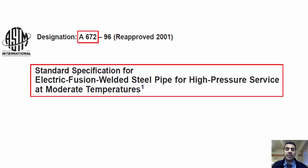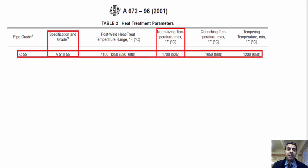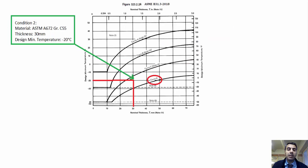Referring to Table 2 of ASTM A672 Grade C55, the standard specification for electric fusion welded steel pipe for high pressure service at moderate temperatures — which we used as an example earlier — shows that the material is normalized and made from ASTM A516 plate. Therefore, both conditions are met to use curve D.